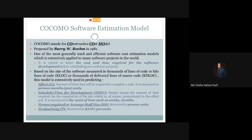The very basic concept behind the COCOMO software estimation model is based on the size of the software, which is measured in thousands of lines of code or kilolines of code, called KLOC, or thousands of delivered lines of source code, called KDLOC.